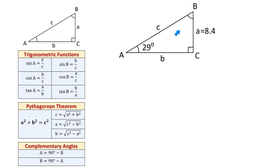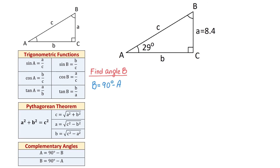In our problem we have to find angle B, side B, and side C. Because we are given angle A, we can find angle B using the formula B equals 90 degrees minus angle A. Replacing angle A with 29 degrees: angle B equals 90 degrees minus 29 degrees, so angle B equals 61 degrees.